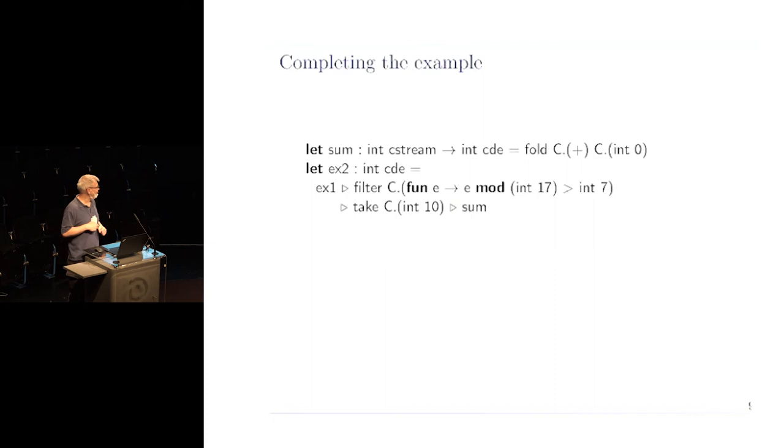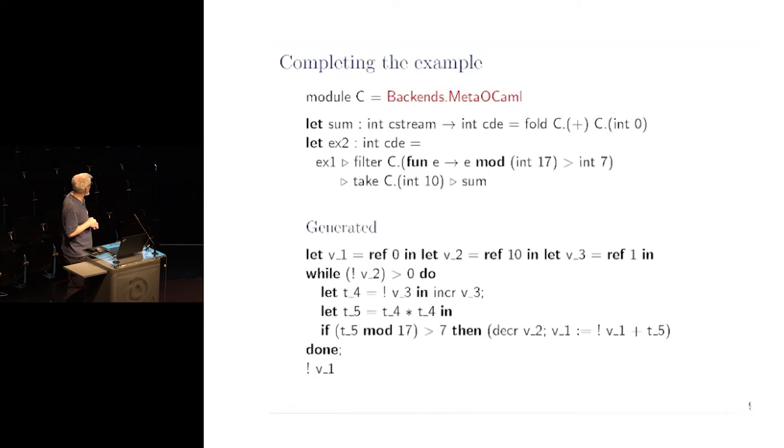We can build the streaming pipeline incrementally. If you use meta-OCaml backend, then you get this piece of code. As you can see, there are no tuples, no options, and no intermediate data structures. It's purely imperative code. You can see how it works. It's a close analog of OCaml-Yak. OCaml-Yak takes user actions and weaves them into the complete parser. This does very similar. It takes user actions like squaring, filtering, and weaves it in the complete stream processing program.